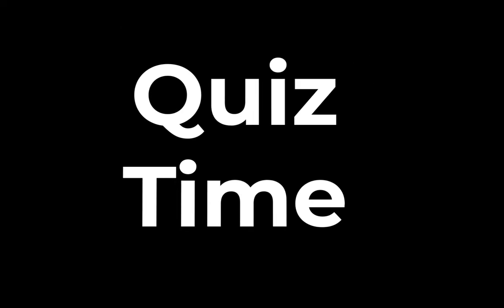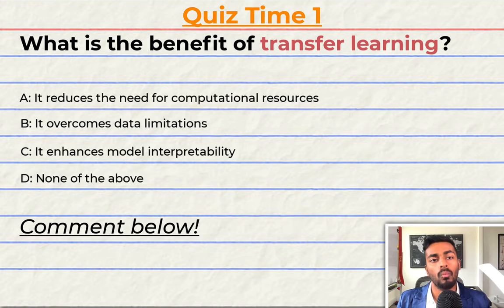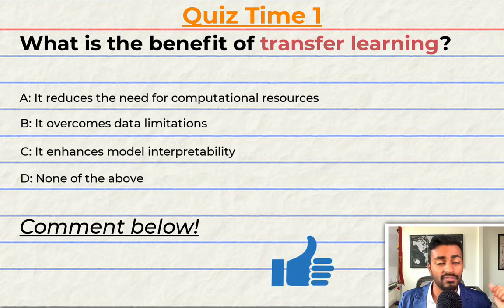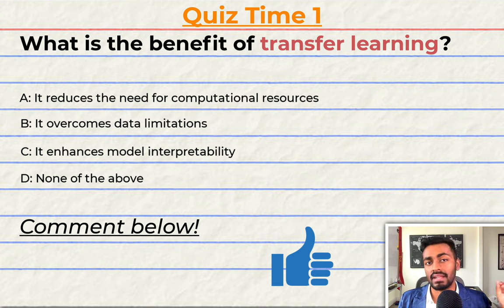Quiz time! Have you been paying attention? Let's quiz you to find out. What is the benefit of transfer learning? A. It reduces the need for computational resources. B. It overcomes data limitations. C. It enhances model interpretability. Or D. None of the above. Please comment your answer down below and let's have a discussion. If you think I deserve it and you love learning, please do consider hitting that like button because it will help me a lot. That's going to do it for pass one and quiz time for now, but keep paying attention because I will be back to quiz you.